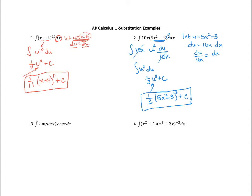Moving on to number 3. The sine of x looks more complex because it's inside the other sine, so I'll let u equal sine of x — trying cosine wouldn't simplify things. So du equals cosine x dx, which means dx equals du over cosine x.